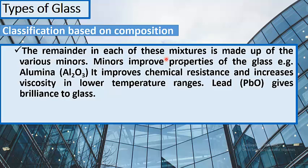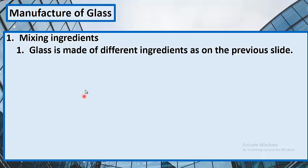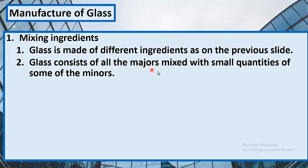The remainder in each of these mixtures is made up of various minors (minor additives). These improve the properties of glass. For example, alumina (Al₂O₃) improves chemical resistance and increases viscosity in lower temperature ranges. Lead oxide (PbO) gives brilliance to the glass. Glass is made of different ingredients — the main measures mixed with small quantities of some of the minor additives.